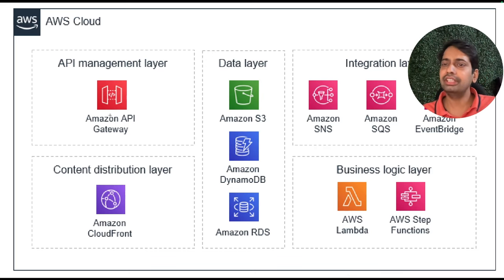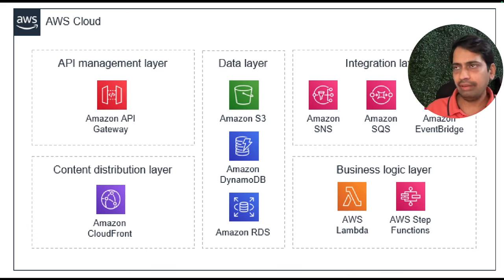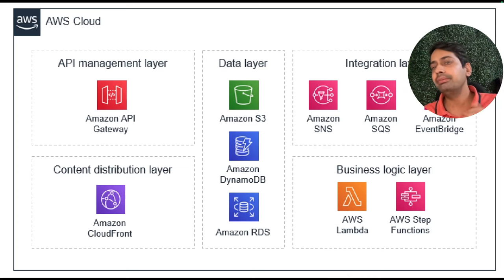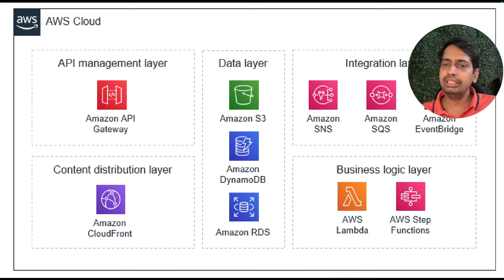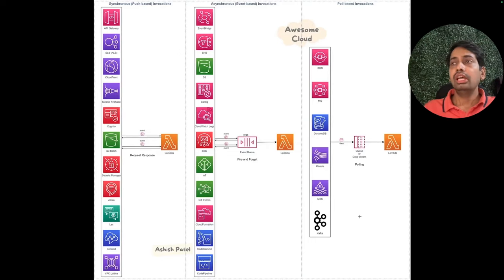There will be a listener Lambda which acts on that event. The event-generator Lambda and the listener-subscriber Lambda are totally unaware of each other — a completely decoupled architecture. This is how we achieve event-driven architecture: emitting events and having listener services or listener Lambdas subscribing to them. The integration layer and business logic layer are where we actually execute the code, either in Lambda or Step Functions.